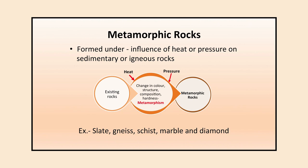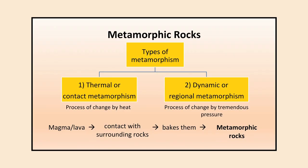Examples of metamorphic rocks are slate, gneiss, schist, marble, and diamond. There are two types of metamorphism: thermal or contact metamorphism, and dynamic or regional metamorphism. Thermal metamorphism is the process of change by heat — magma comes out as lava and contacts surrounding rocks, baking them and changing their shape, color, and hardness. Dynamic metamorphism is the process of change by tremendous pressure.